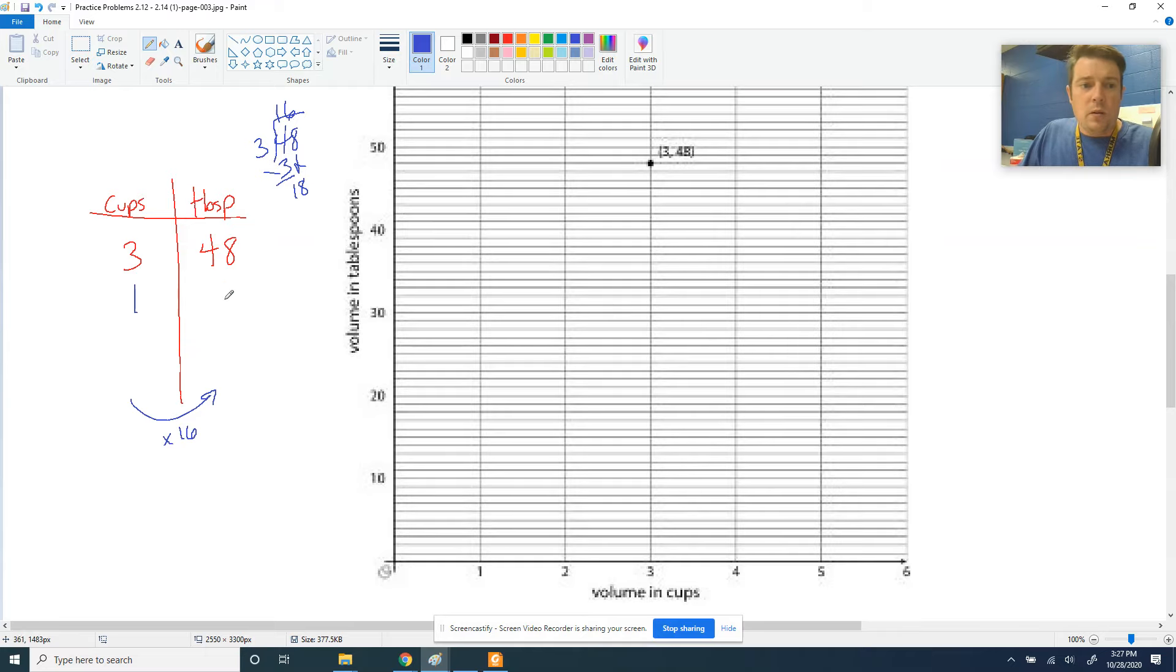So if I've got 1 cup, I've got 16 tablespoons. And if I've got 2 cups, I've got 32. So these ordered pairs, 1 and 16 and 2 and 32, are going to pop up on this graph.